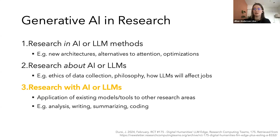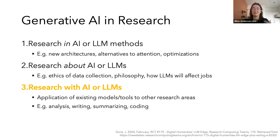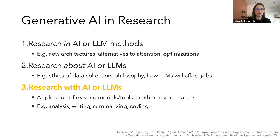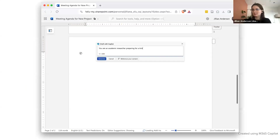The final category is research with AI or LLMs — where AI helps assist us in our research, rather than our research being about or in that space. This is about applying existing models to other research areas, or using AI to help with research infrastructure like writing code or summarizing papers. This will be the focus of what I talk about today — applying already-built models to different topics and disciplines.